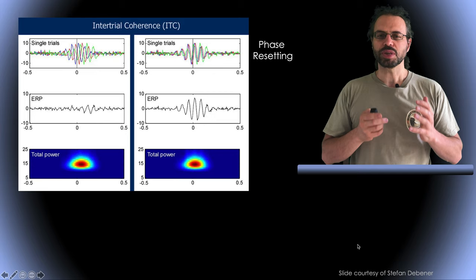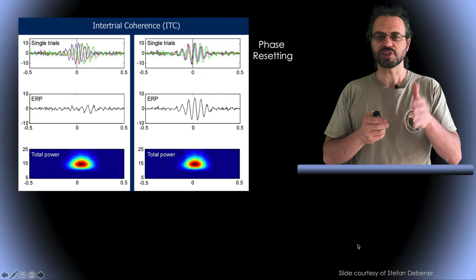This is reflected in the ERP averages. On the left, the ERP is almost flat while on the right we observe several peaks.